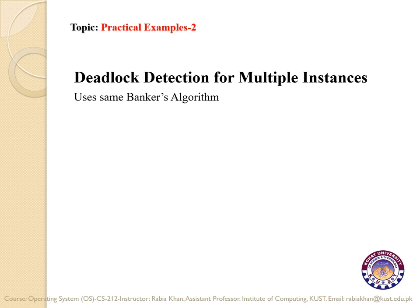If we have multiple instances of a single resource, then we have to use the same Banker's algorithm as discussed previously in chapter 5 when we were discussing deadlock in detail. For multiple instances, you apply the Banker's algorithm to detect if the situation is in a safe state or unsafe state. A safe sequence of resources means there is no deadlock, but if the sequence is in an unsafe state, then there is a possibility of deadlock.